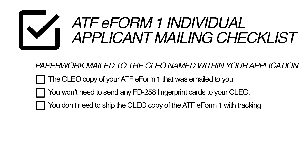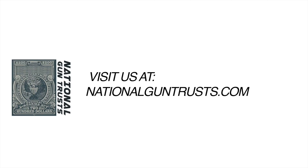The following items will be sent to the CLEO named in your application: the CLEO copy of your ATF eForm 1 that was emailed to you. You do not need to send FD-258 fingerprint cards to your CLEO, and you don't need to ship the CLEO copy with tracking. After your cover sheet and fingerprint cards are received by the ATF, your application is considered submitted. Once approved, the ATF will email your tax stamp to the email address on your ATF eForm account — the ATF will not send a physical tax stamp. This completes the ATF eForm 1 Individual Applicant Video Walkthrough Guide. If you have further questions, you can email us using the link in the video description or reach out on Reddit at u/NationalGunTrusts.